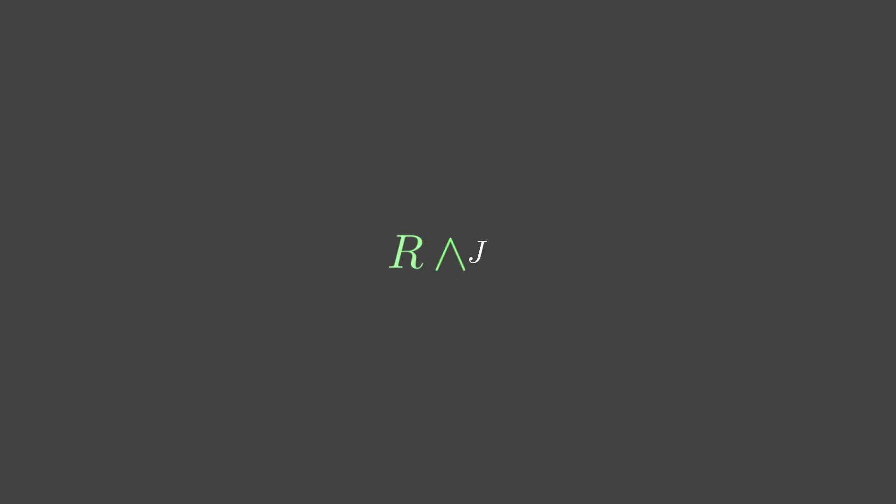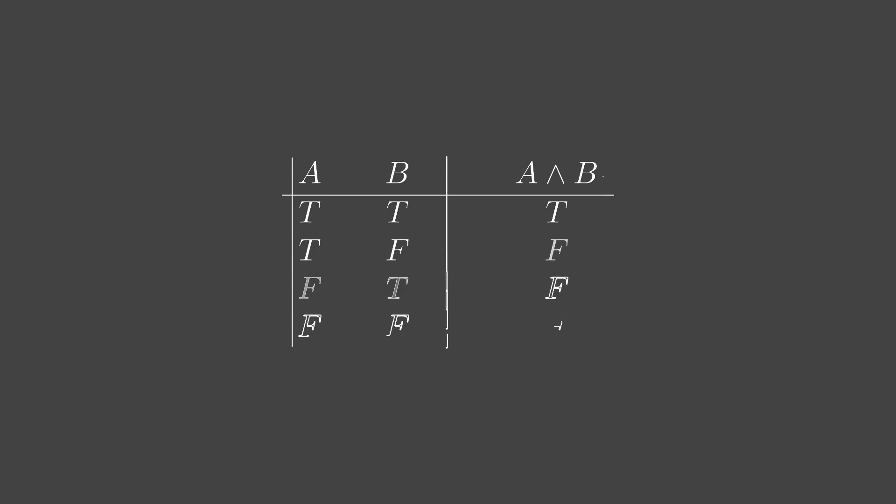Given two statements, R and J, the logical conjunction is true when both R and J are true, and it would be false when either one of them is false, just like in natural language. This is kind of annoying to keep track of, so we can actually encode this information in a table. We call this a truth table because it represents the truthiness of our statement.